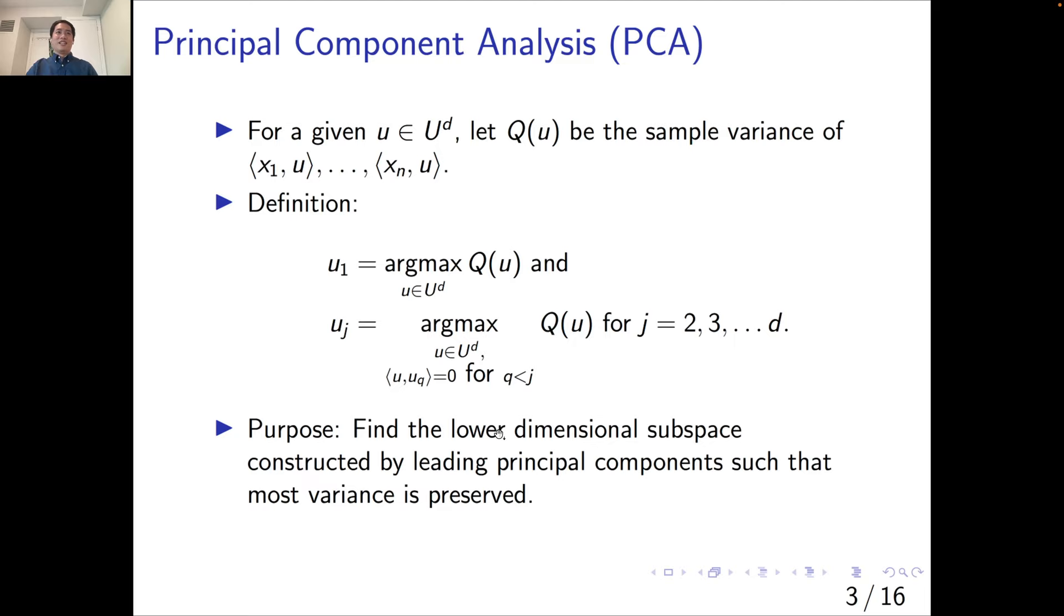Let's take a quick review of what is under the hood of principal components analysis. Suppose we have a unit length vector u, and let's define Q(u) as a sample variance of our data x1 to xn projected onto this direction. Then we define the first principal component as one that maximizes the sample variance. All subsequent principal components are orthogonal to all previous principal components, but also maximize the residuals. By the end of the day, the principal component will help you find a lower dimensional subspace that preserves as much variance as possible.